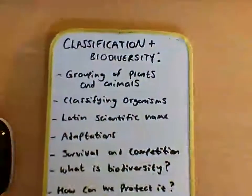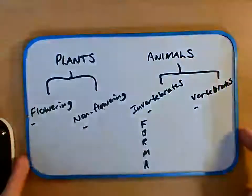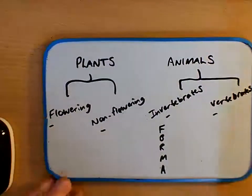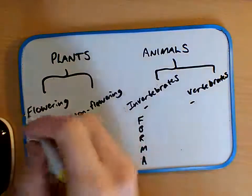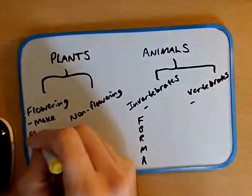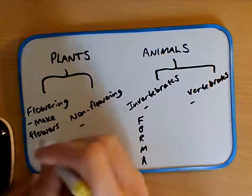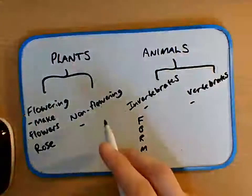So we'll start at the top, how we group plants and animals. Plants are quite easy in the sense that they've only really got two groups. We've got the flowering plants, basically they make flowers, something like a rose.